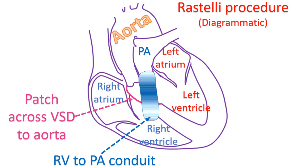The Rastelli procedure is done in cases of transposition of great arteries with ventricular septal defect and left ventricular outflow obstruction, when arterial switch is not feasible. It was described by GC Rastelli in 1969.